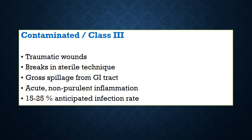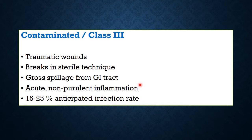Class 3 — contaminated wounds — are generally seen in trauma. Here the sterile technique is broken or there may be gross spillage from the GI tract, and acute non-purulent inflammation is already present. The anticipated infection rate is 15 to 25 percent.